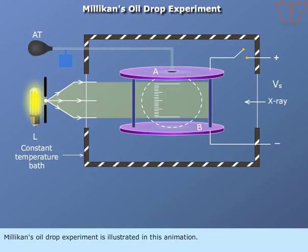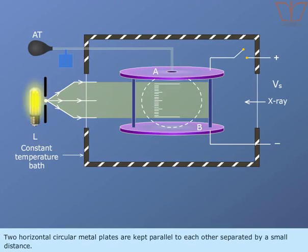Millikan's oil drop experiment is illustrated in this animation. Two horizontal circular metal plates are kept parallel to each other separated by a small distance.